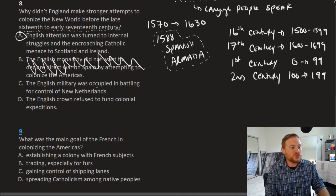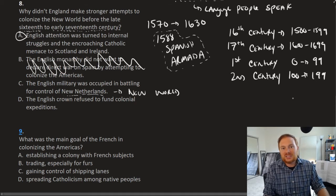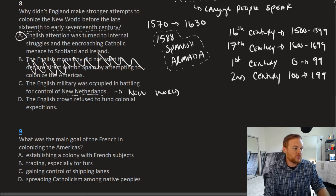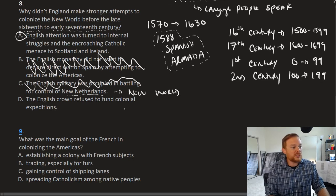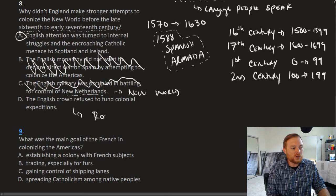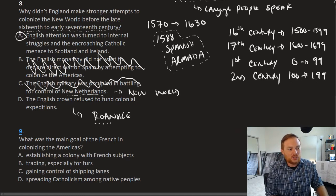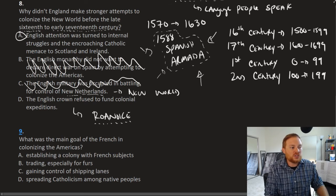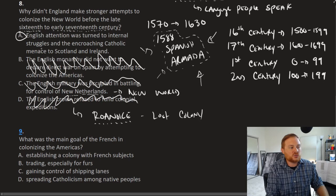So we can get rid of answer choice B. The English military was occupied in battling for control of New Netherlands. Again, where is New Netherland? That is in the New World. This doesn't make sense. How could the English be busy in the New World and then not send anybody to the New World? This answer choice is just nonsensical. And question D, the English crown refused to fund colonial expeditions. This could potentially be an answer, but let's recall the first English settlement of Roanoke. So it wasn't that there weren't any efforts to fund colonies. Roanoke is an example of England trying to fund a colony. But then because the Spanish Armada attacked, those supply ships could not continue and Roanoke became the lost colony. So we can also eliminate D as a possible correct answer choice, leaving us with A.